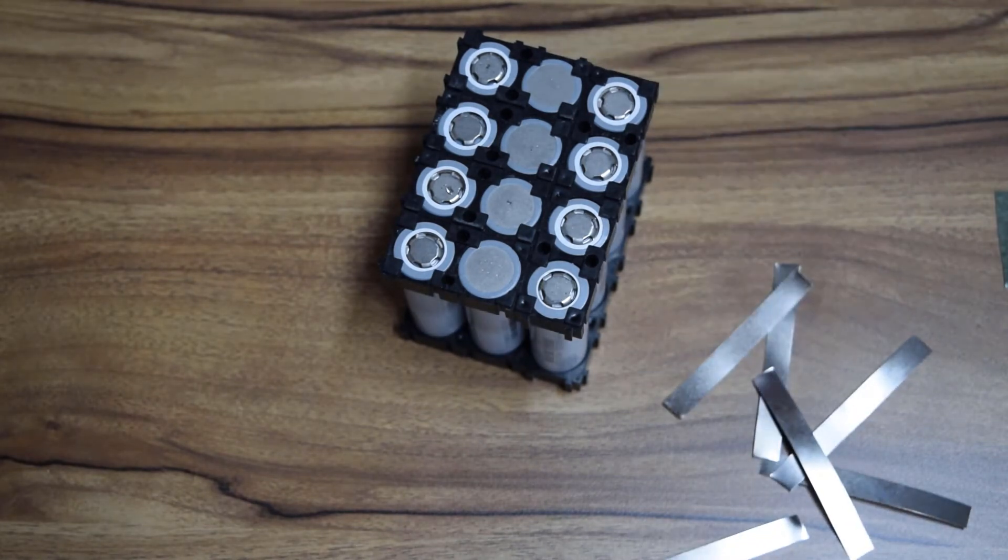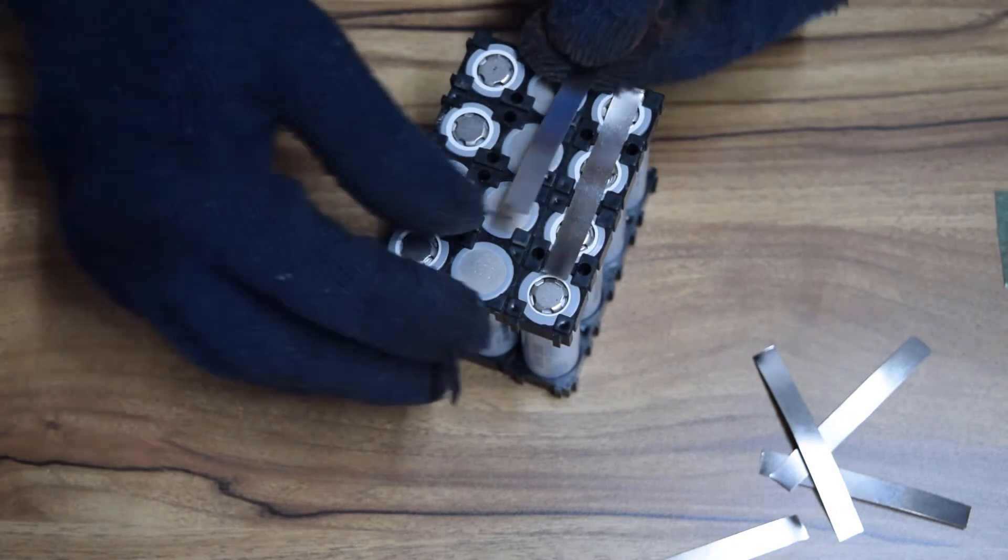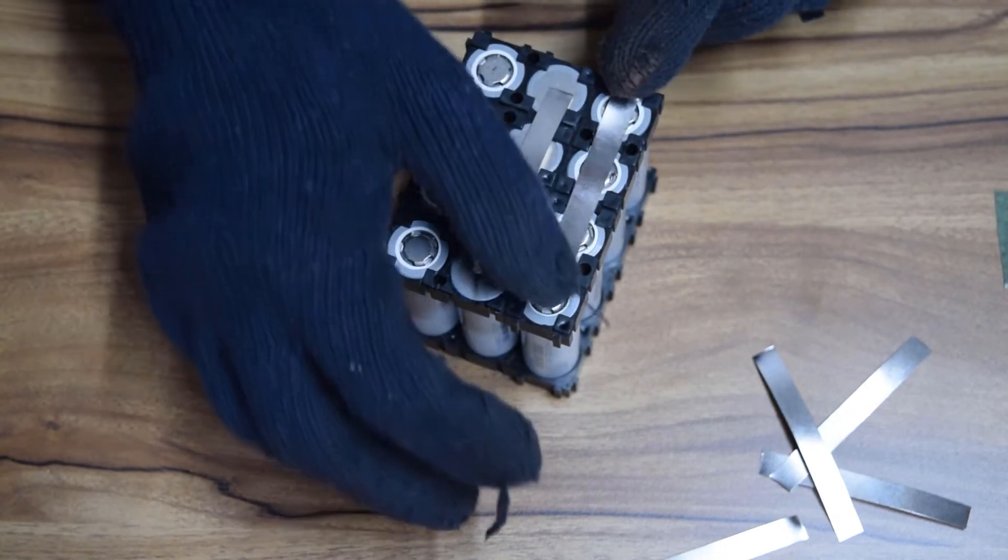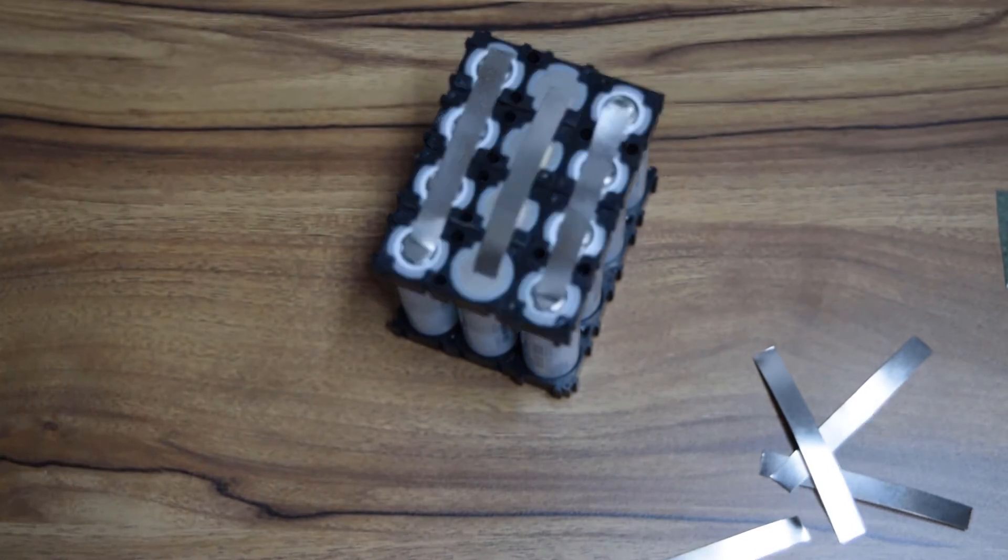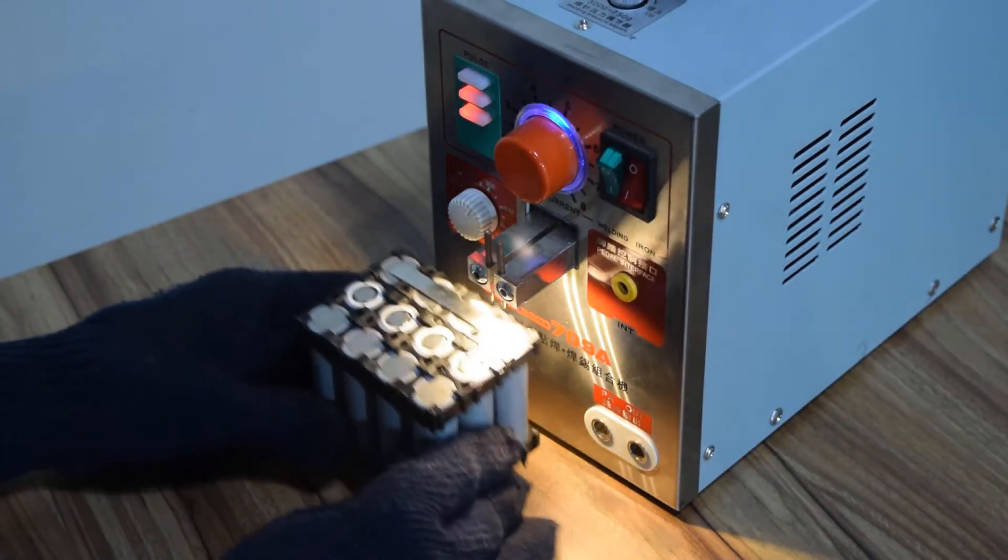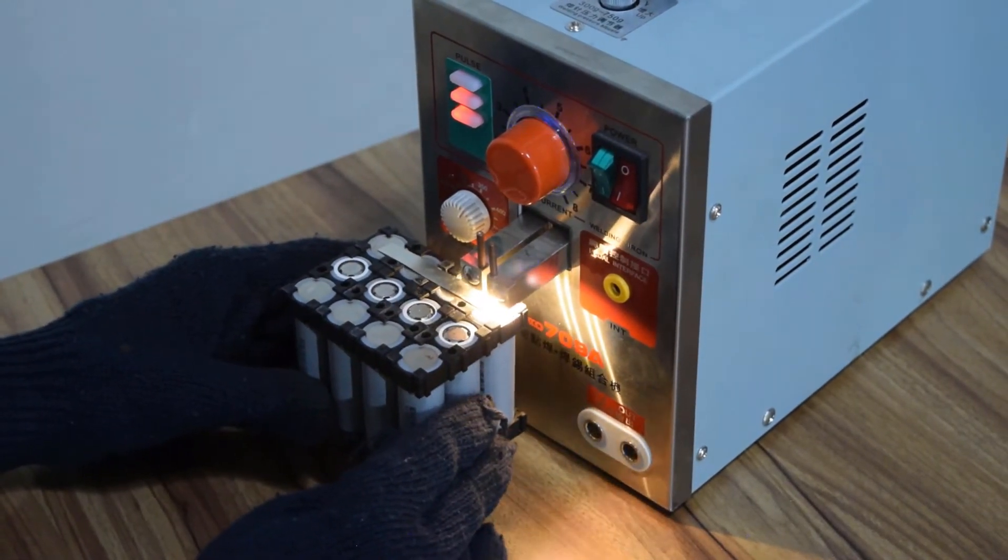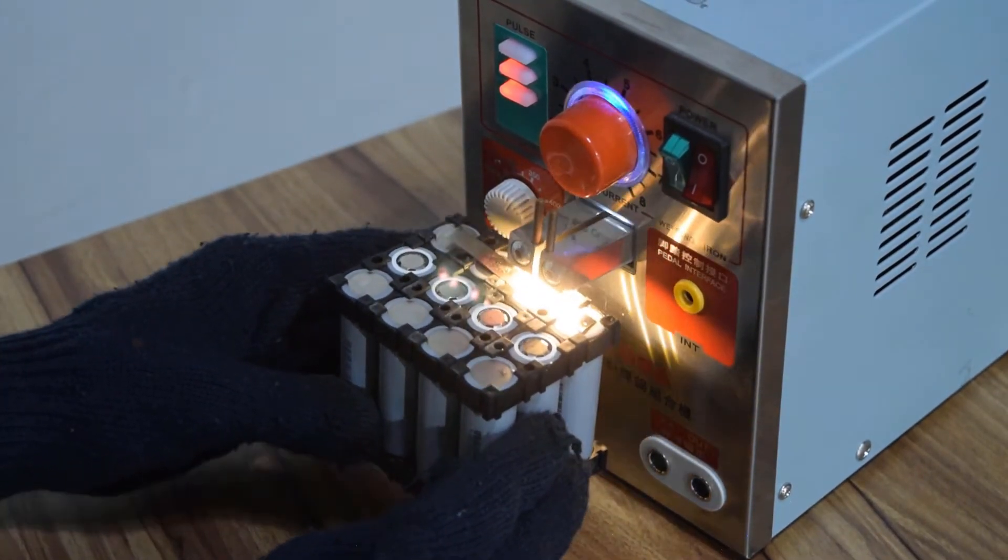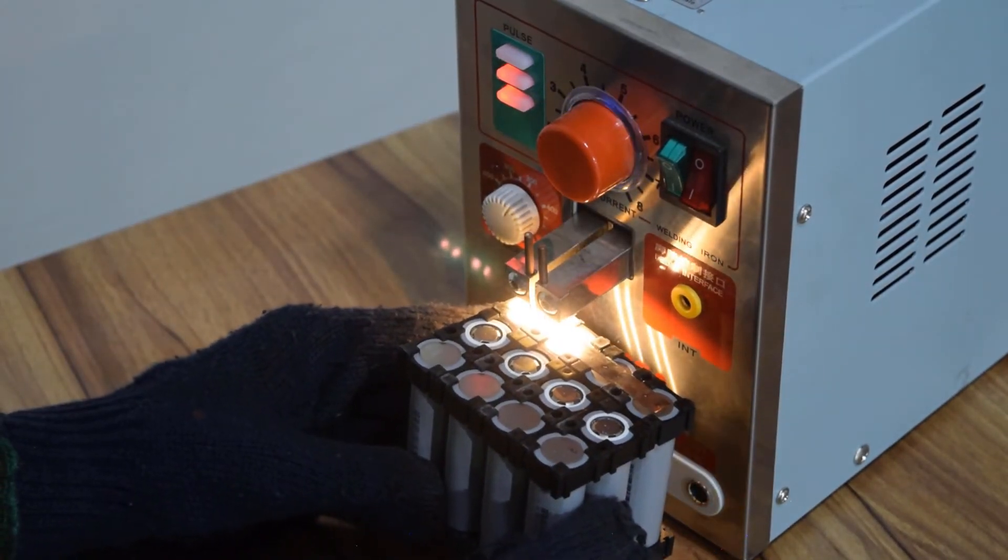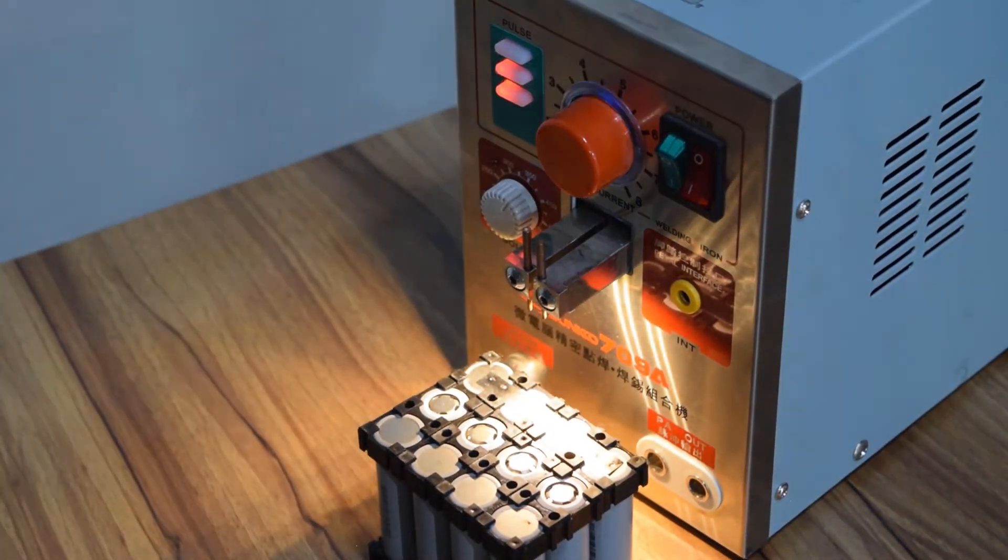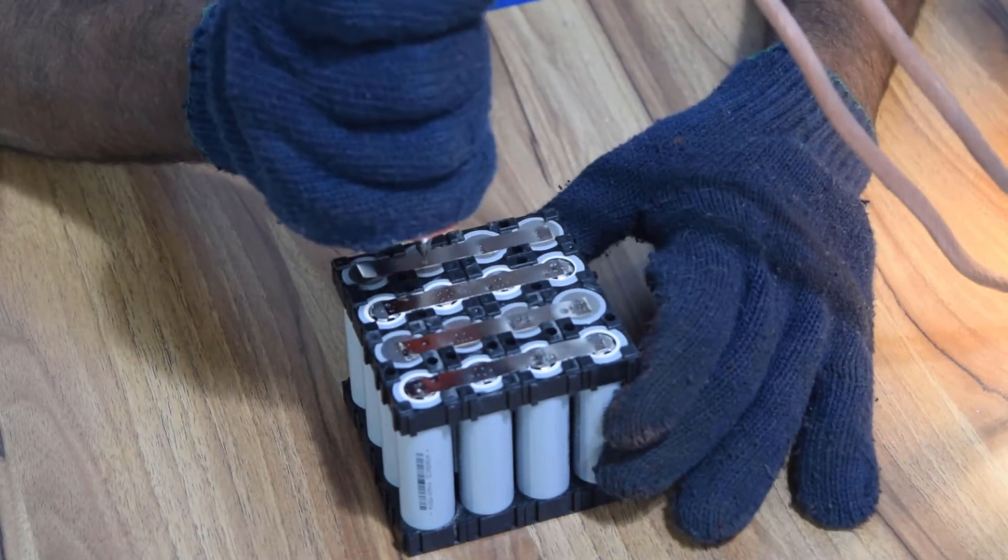The nickel strips are spot welded onto the cells using this spot welder. You can also use the handheld tool in the spot welder machine to do the same work.